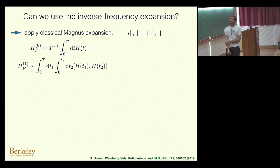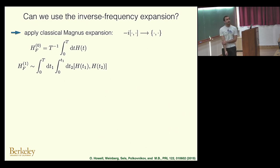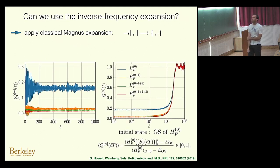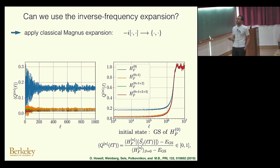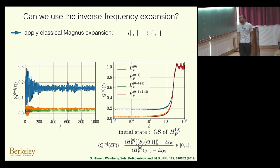The next question: can we use the Magnus expansion to describe the pre-thermal plateau? Naively replacing commutators by Poisson brackets in our expressions and computing the corresponding expansion, we find that the higher the order in the expansion, the lower the pre-thermal plateau, corrected by powers of the frequency. For observables such as the magnetization, the blue dots show the exact evolution and the different colors show different orders of the expansion. Already going to a sufficiently high order captures the dynamics very nicely at a finite frequency of about 5 in units of the interaction.